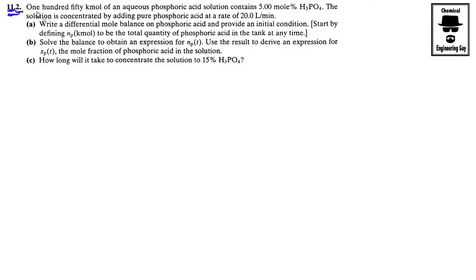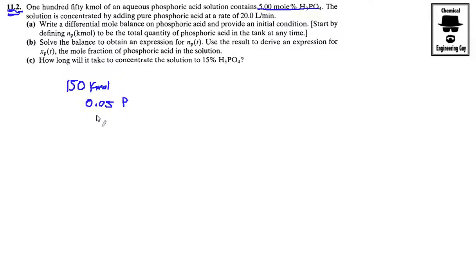We're talking about 150 kilomoles of an aqueous phosphoric acid solution. You have a solution that contains this percentage — convert it to a fraction of phosphoric acid, which I'm going to call P, and water, which I'll call W. They tell you the solution is concentrated by adding pure phosphoric acid at this volumetric flow rate here.